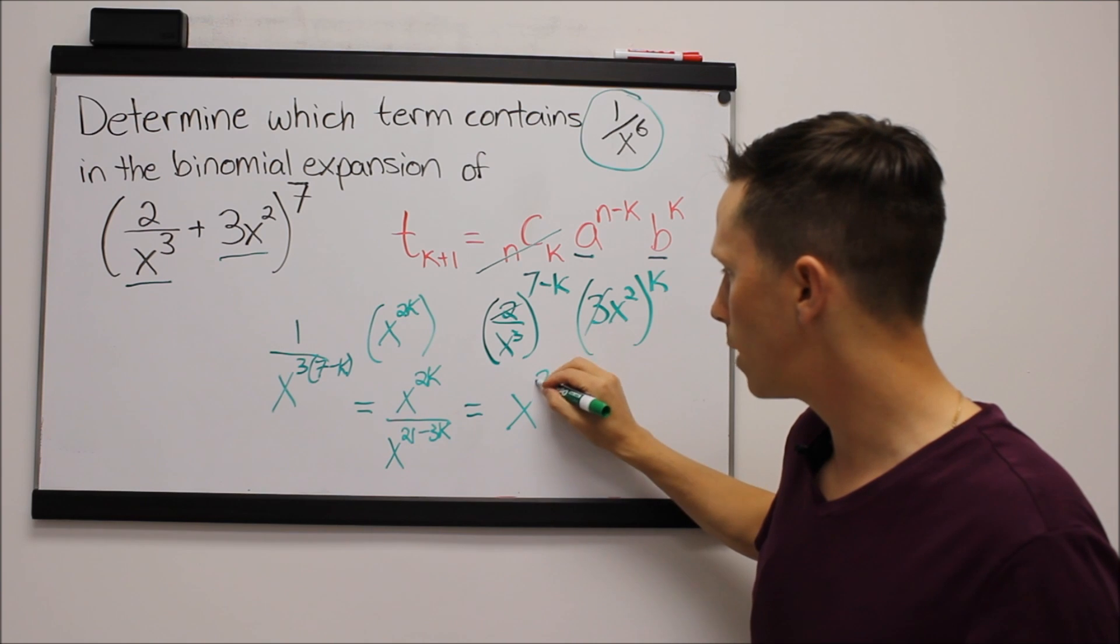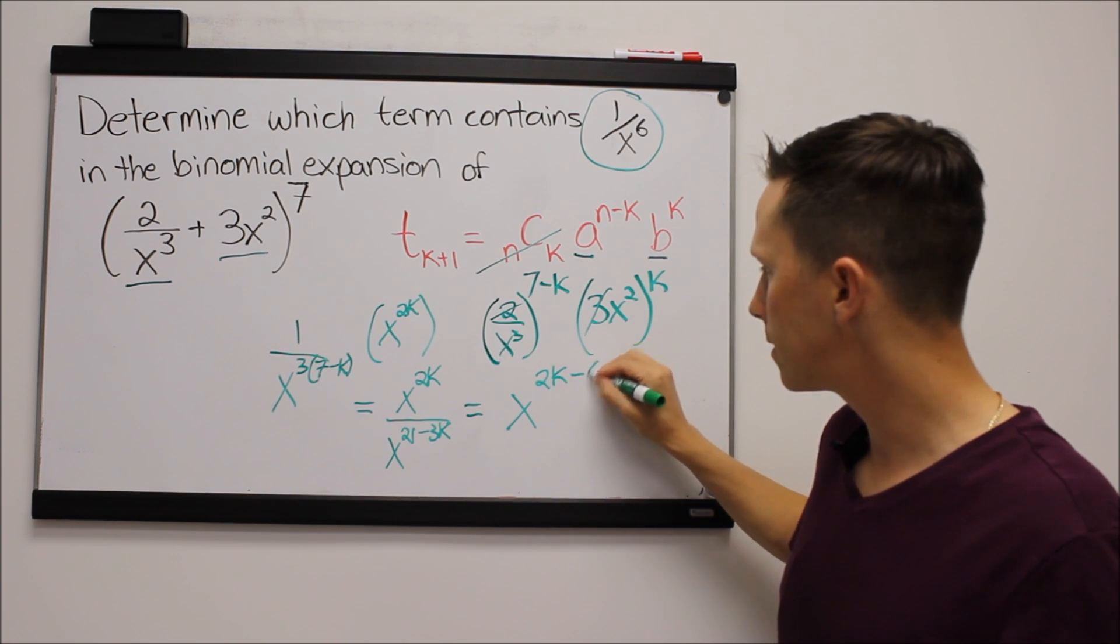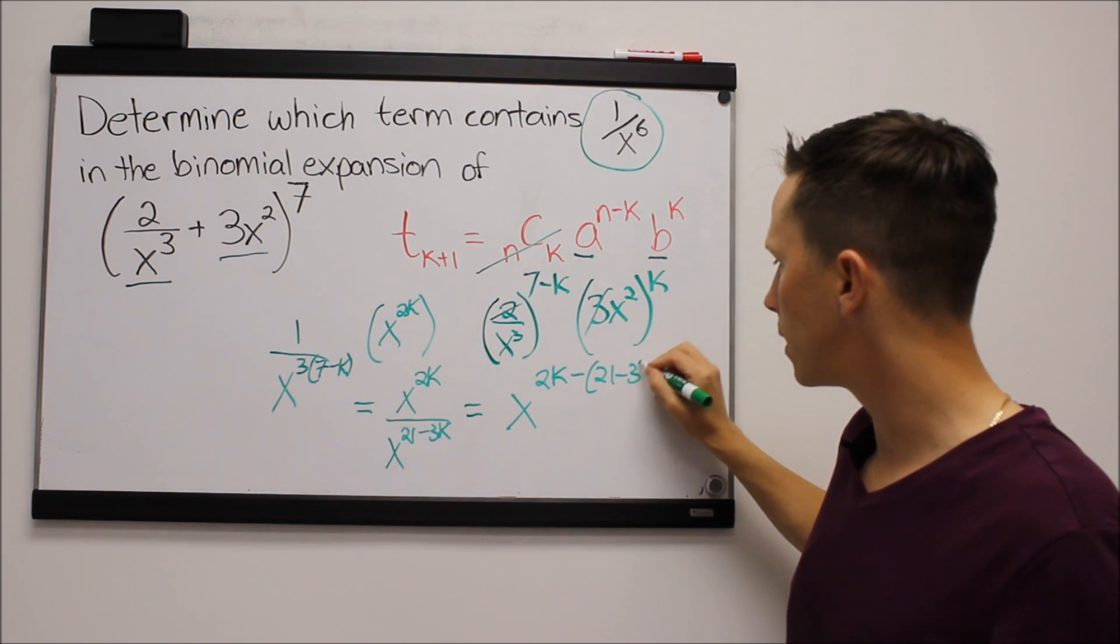So this is going to be x to the 2k minus 21 plus 3k.